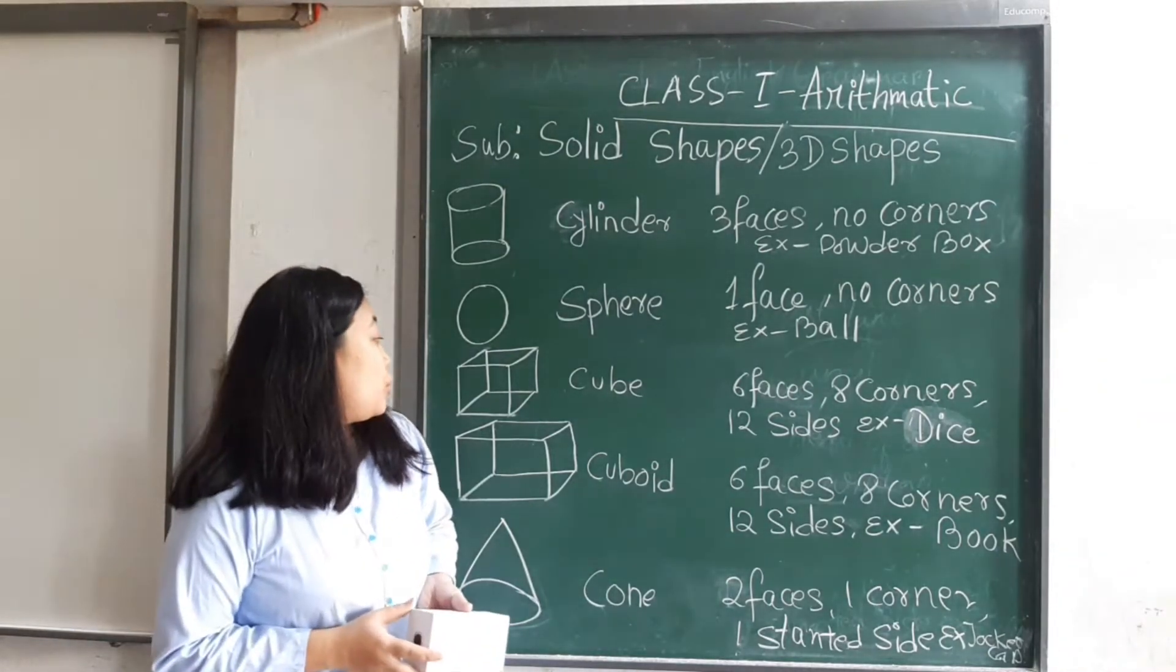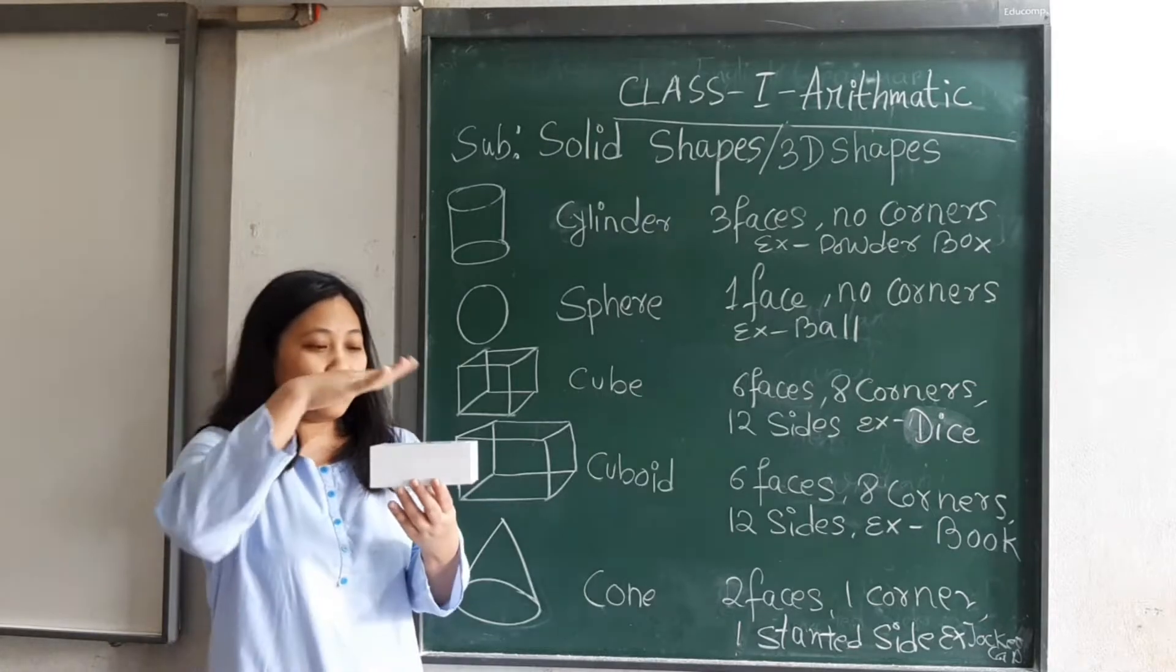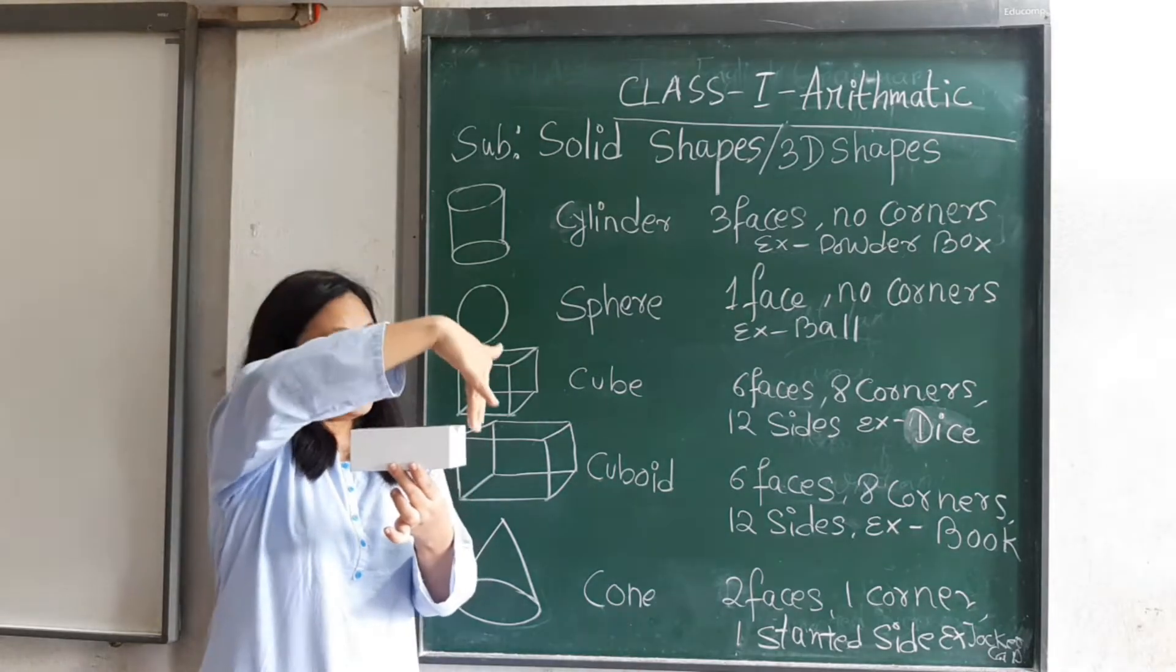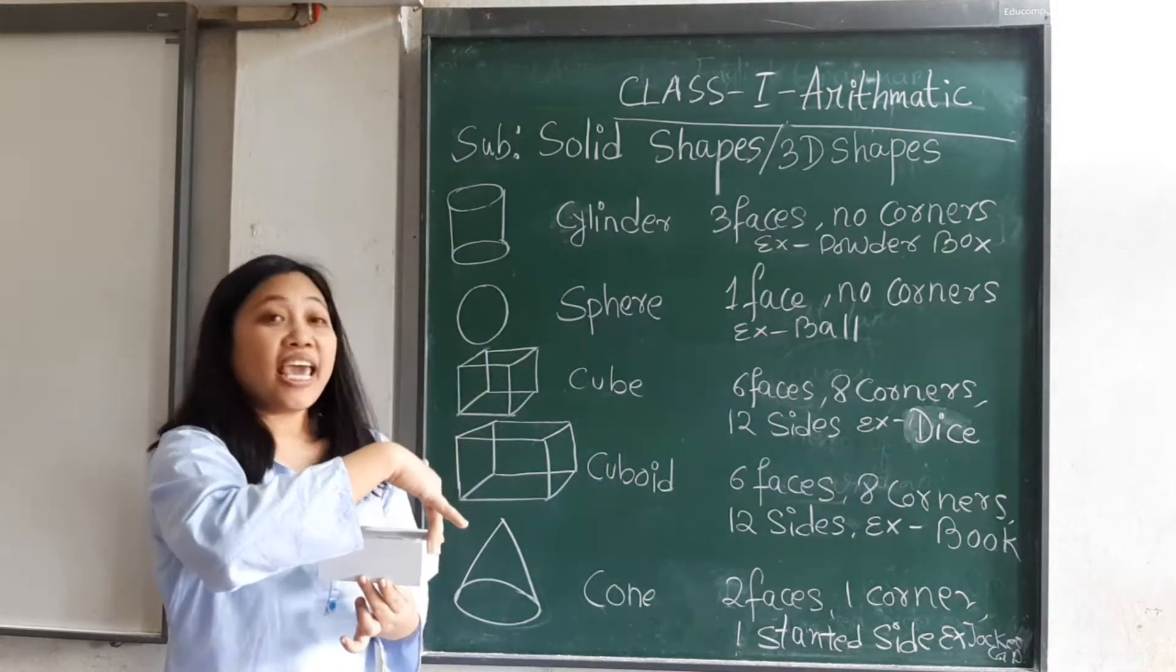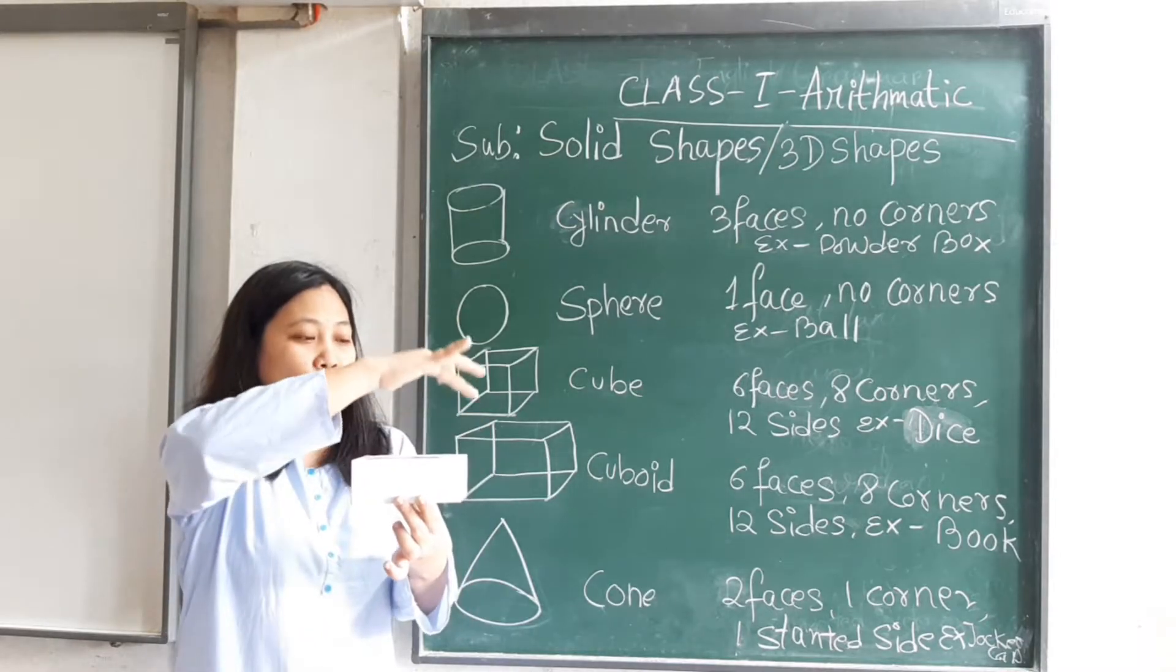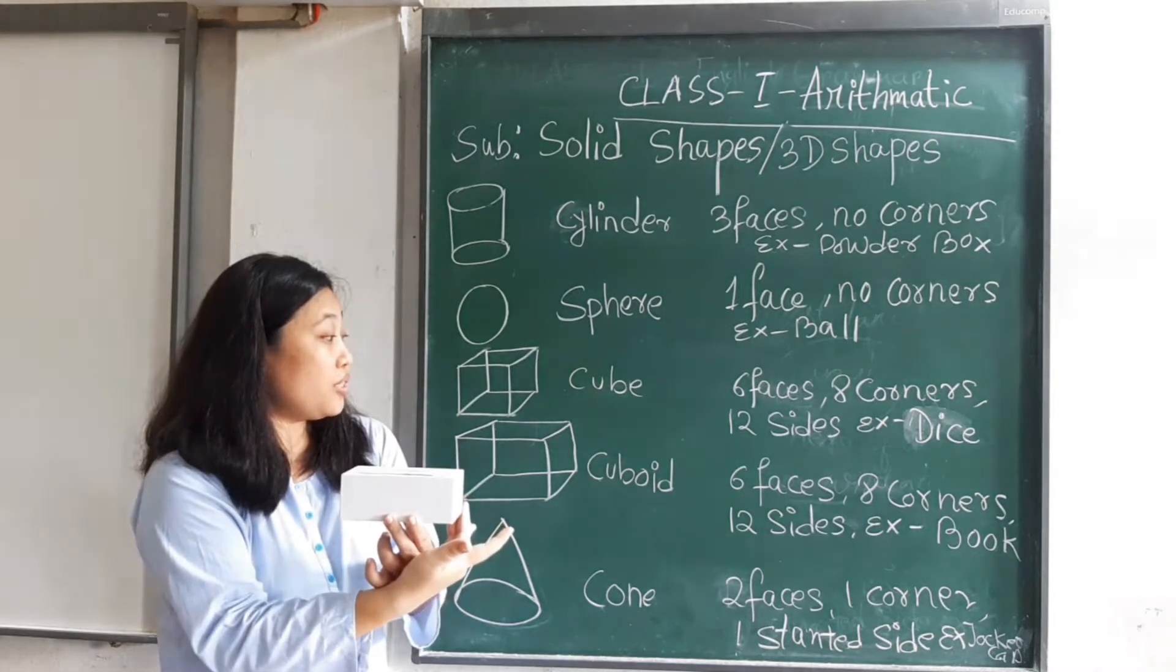Then cuboid. Now cuboid also has six faces: one, two, three, four, five, six. Eight corners.